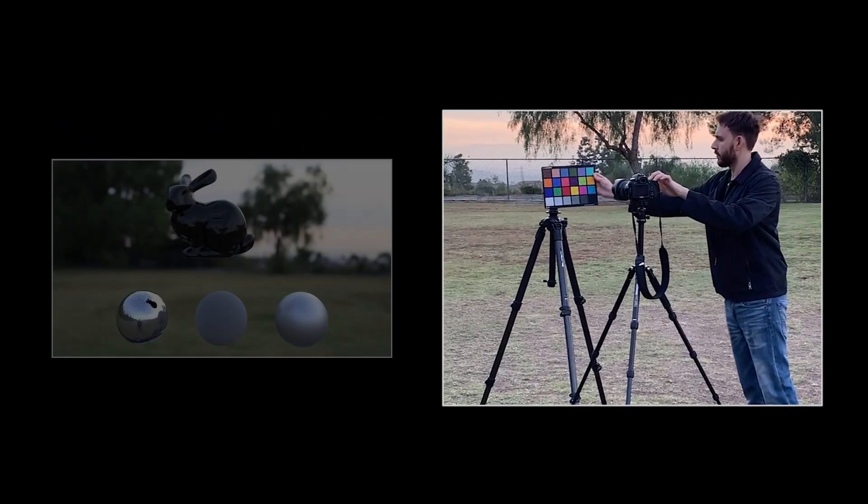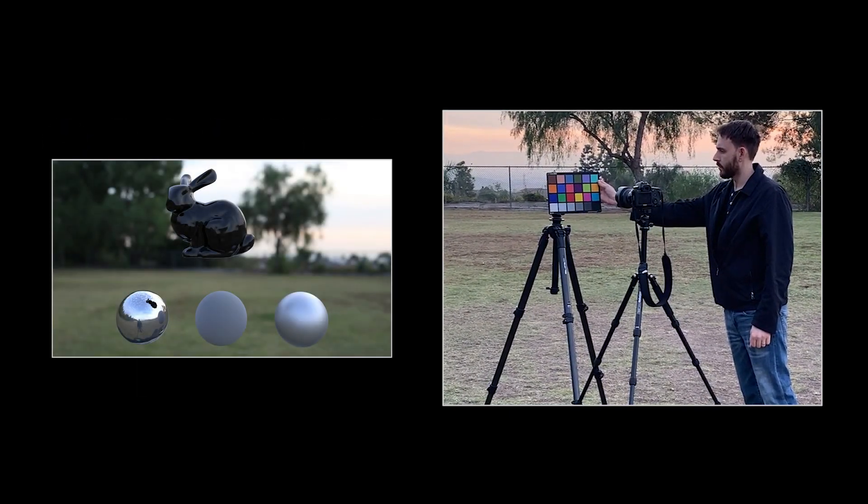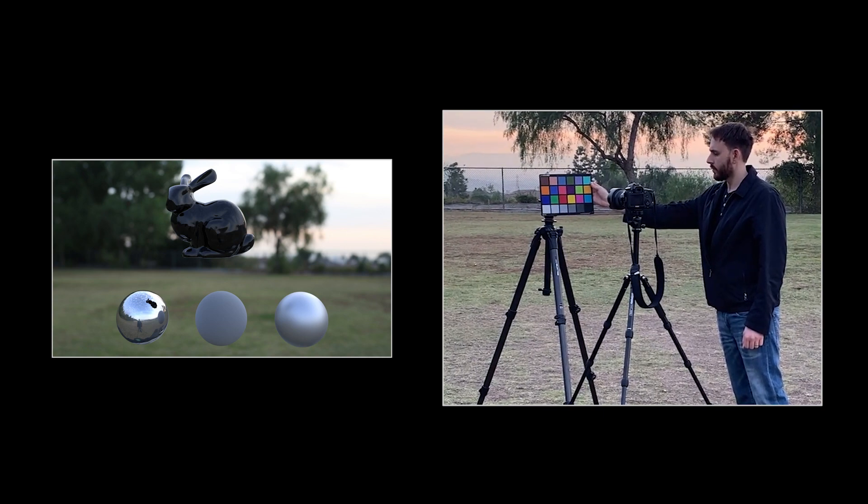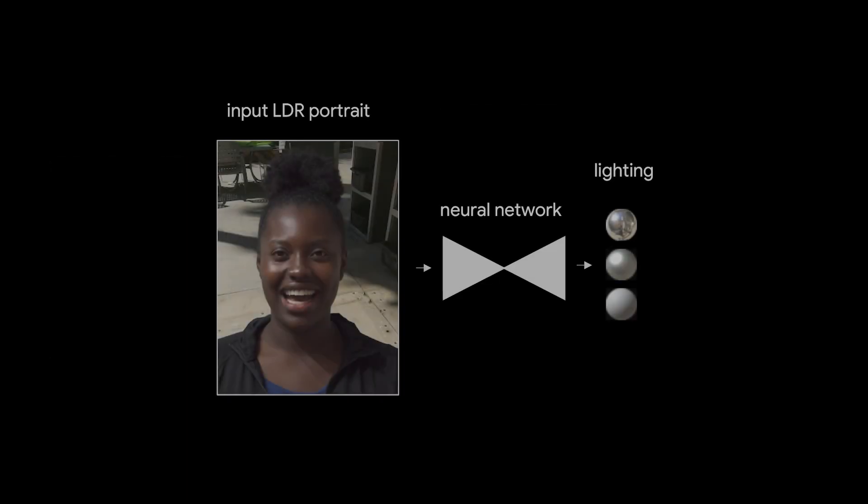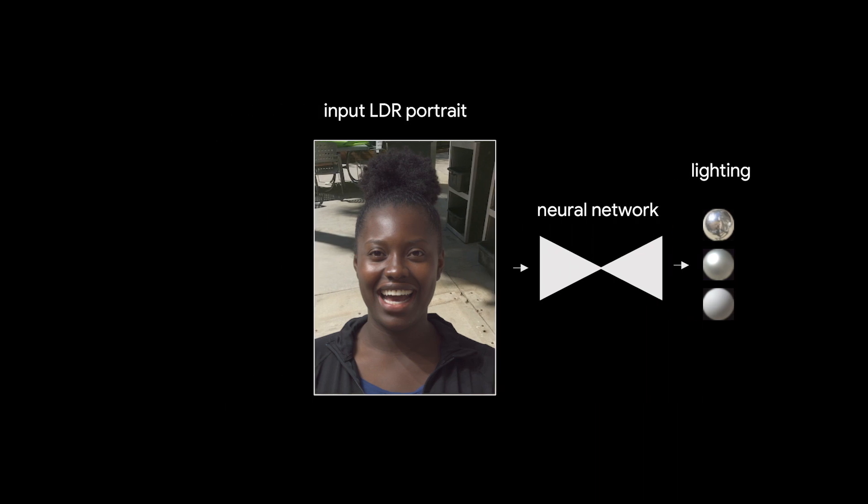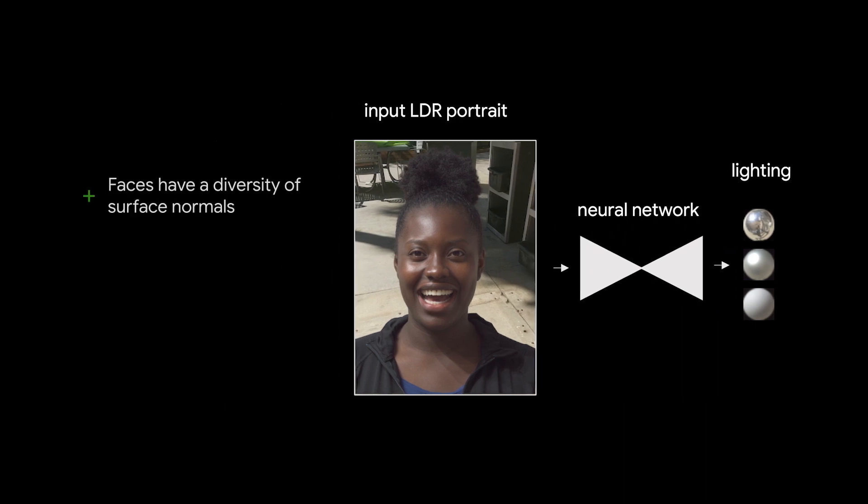However, for offline visual effects, light probes may not always be available, and for real-time augmented reality, lighting measurement is impractical. Our solution is to train a machine learning model to replace the mirror ball with a face, inspired by the fact that faces have a diversity of surface normals and reflect light somewhat predictably.